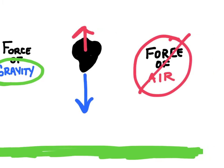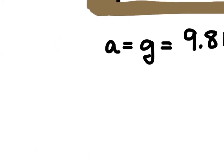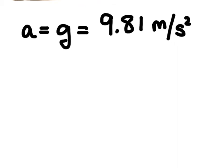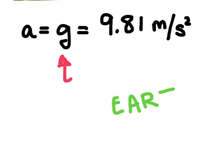The force of gravity is going to cause an object to fall at a constant acceleration, and that acceleration is 9.81 meters per second squared — we call this the acceleration due to gravity. Normally we indicate this acceleration with the symbol g, a lowercase g. It's also important to note that this acceleration due to gravity is for objects that are free falling on Earth.